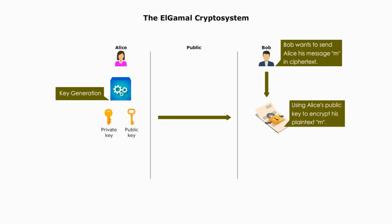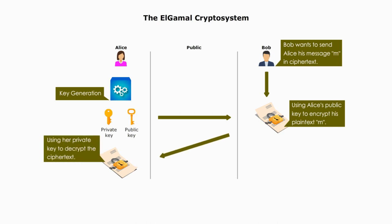Step 2: Bob, the message sender, will use Alice's public key to encrypt his message and send the encrypted ciphertext to Alice. Step 3: Alice uses her private key to decrypt Bob's ciphertext.